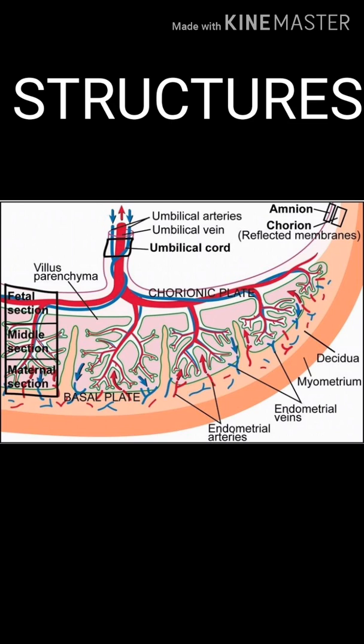The human placenta has almost 60 stem villi, and each cotyledon contains three to four major stem villi.